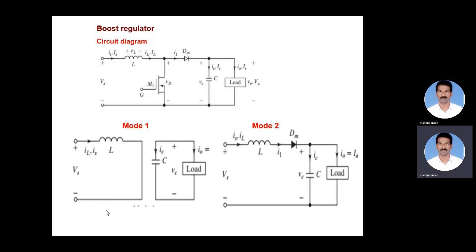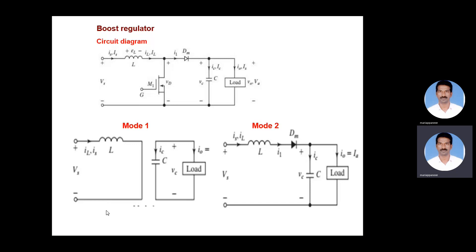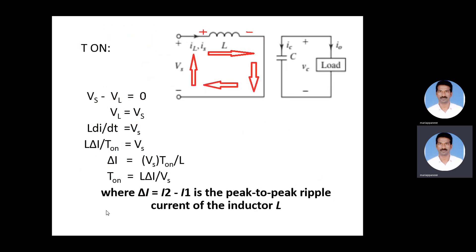We can prove the type of converter from the discussion. The discussion has two modes of operation: mode one and mode two. As we know, there are two choices for a switch — it may be in a closed condition or it may be in an open condition. Assuming the MOSFET switch is in the closed condition, that is mode one operation.